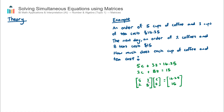If you're unsure why we can write it this way, try multiplying out the two matrices on the left-hand side. Using matrix multiplication on the two-by-two multiplied by the two-by-one, you'll find it turns back into the original algebraic form. Now that we have it in matrix form, we can go ahead and solve this simultaneous equations example using matrices.